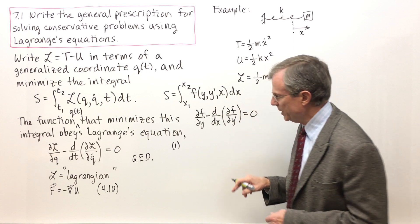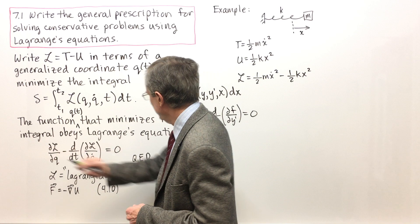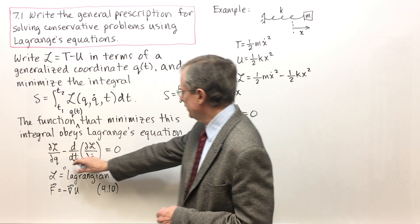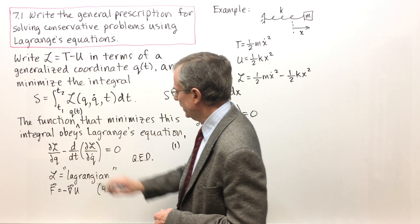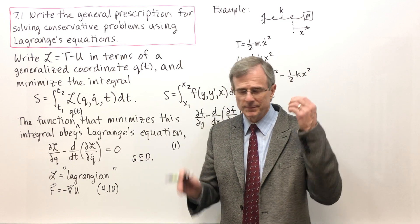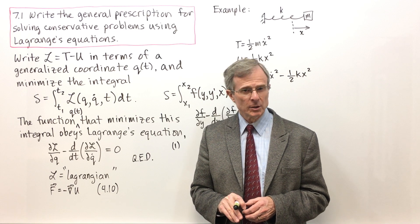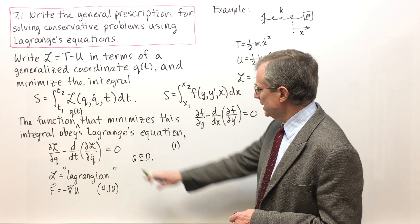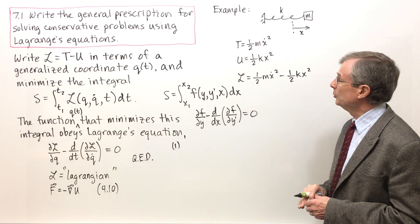That was the Euler-Lagrange equation. Following the same substitutions that we did before, we're going to replace F by L, Y by Q, X by T, F by L, and Y' by Q dot. And these are Lagrange's equations. It's basically the same thing, just with the different variables as the Euler-Lagrange equations. So that is the end of that concept. I'm going to now do an example of how to apply that concept.